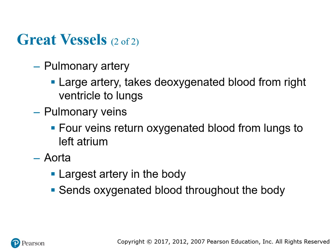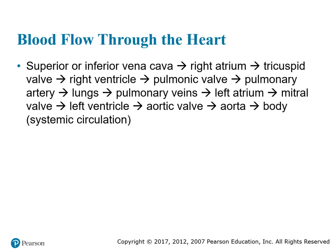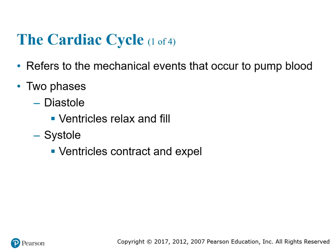Blood flow through the heart follows this path: SVC or IVC → right atrium → tricuspid valve → right ventricle → pulmonary valve → pulmonary artery → lungs → pulmonary veins → left atrium → mitral valve → left ventricle → aortic valve → aorta → body. This cycle then repeats continuously.